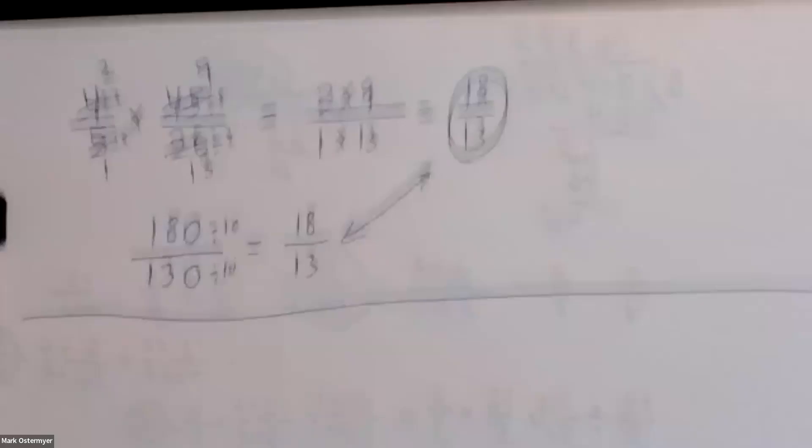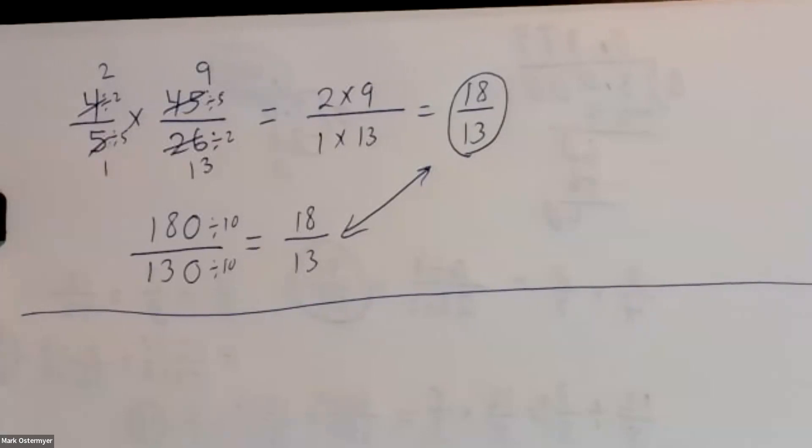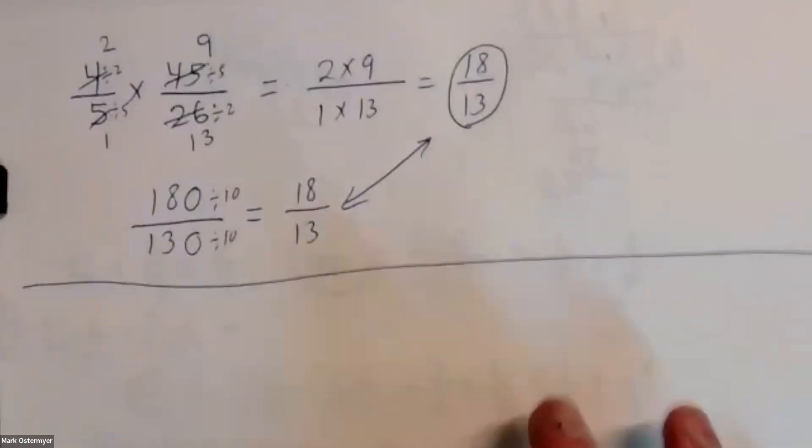Whether you want to cross-cancel first then multiply, or multiply first then reduce, it's up to you. Sometimes cross-canceling is nice because otherwise you have to reduce very big numbers at the end and it will be more complicated.